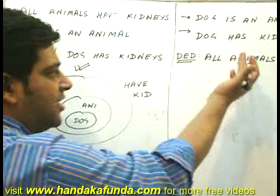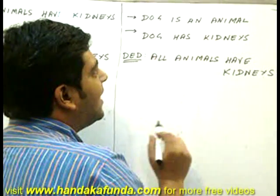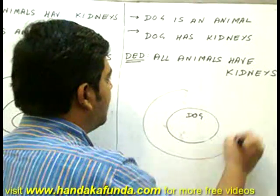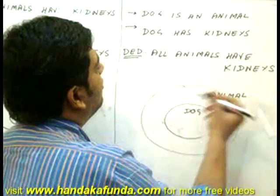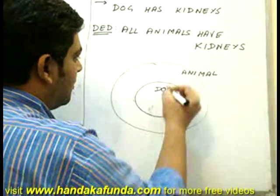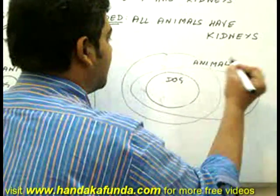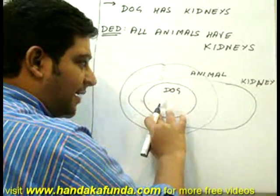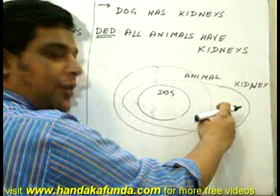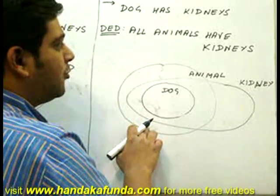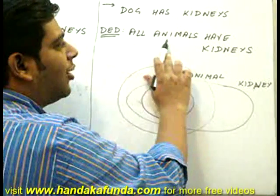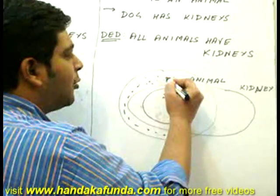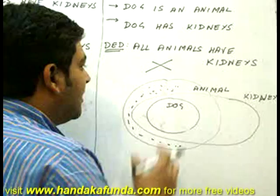Let's see what happens when we change the order. Now I am given that dog is an animal, so first I draw a dog and then a bigger set representing animal. I also know that dog has kidneys, so my kidney set will be something like this, because my dog needs to have a kidney. All my dogs will have kidneys, but there might be some animals who don't have kidneys. And hence I look at the deduction: all animals have kidneys — incorrect. As you can see from the dots I am making, animals in this portion do not have kidneys, and this is an invalid statement.